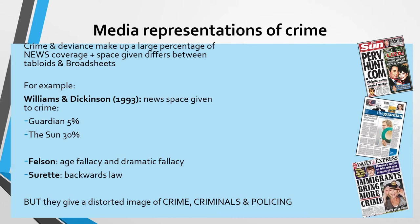More broadsheet newspapers give a much smaller proportion — around five percent — to those kinds of stories. Williams and Dickinson also found that 65% of newspapers reported violent crimes, despite violent crime only making up about six percent of all crimes in the UK. So there's this over-representation of violent crime that is not in proportion to the reality. For example, Michael Moore's documentary 'Bowling for Columbine' showed that the homicide rate had fallen by about 20% while news coverage of murder and violence had increased by about 600%.